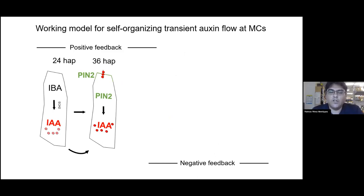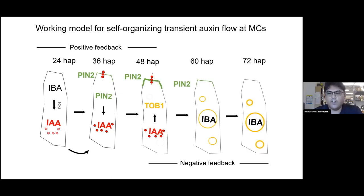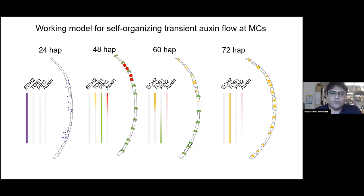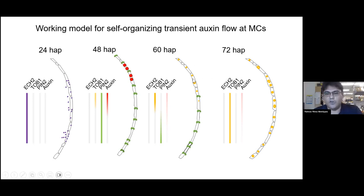With that evidence we propose our working model for this self-organizing, transient auxin flow at the margin cells. At the beginning, a positive feedback loop exists where auxin stimulates PIN2 expression and thereby its own transport in these cells. Later on, higher levels of auxin stimulate TOP1 expression to sequester the precursor IBA, causing a decrease in PIN2 levels. At the tissue level, auxin — shown in red — increases towards the tip as a consequence of PIN2 function, and that increased auxin turns on TOP1 to decrease PIN2, illustrating the self-organizing nature of this system.